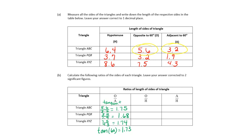Those values were all pretty close to 1.73 — that's what they should have been. So whenever I have a 60-degree angle and I divide the opposite side by the adjacent side in a right triangle, it will equal 1.73. If I change the angle, the ratios change — for example, the tangent of 45 degrees is 1, so dividing opposite over adjacent for a 45-degree angle always gives me 1.